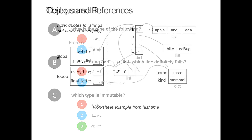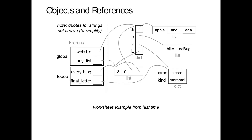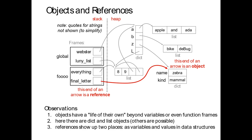Last lecture we had a picture of all these different data structures and were tracing arrows to go from one variable through square bracket indexing to get to a piece of data. Now I want to look at this picture and talk about why we drew it the way we did. We've got two places in memory: on the left is the part called the stack, and on the right is the part called the heap.